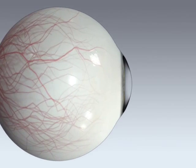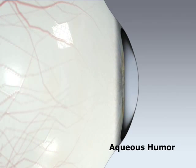The aqueous humor is the thin, watery fluid that fills the anterior chamber, or the space between the cornea and the iris.